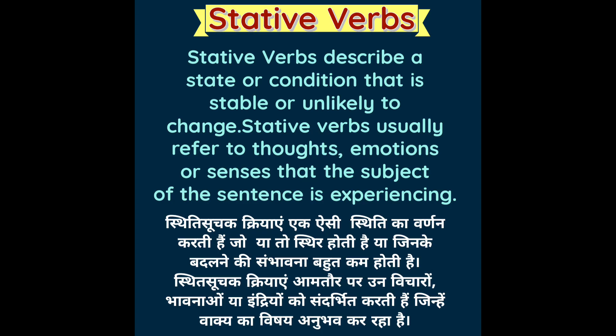Stative Verbs, jinko sthiti suchak kriyayen bhi kaha jaata hai. Stative Verbs describe a state or condition that is stable or unlikely to change. Sthiti suchak kriyayen aisi sthiti ka varnan karti hain, jo ya toh sthir hoti hain, ya jiske badalne ki sambhavna bahut kam hoti hai. Stative Verbs usually refer to thoughts, emotions, or senses that the subject of the sentence is experiencing.